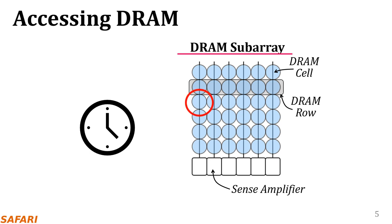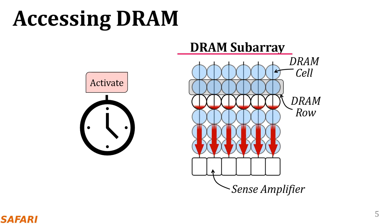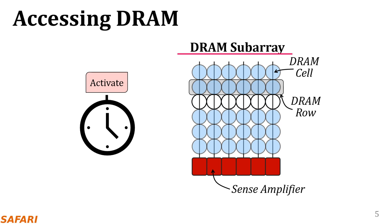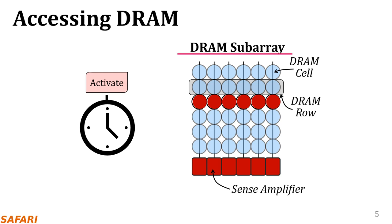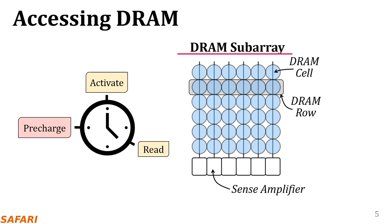Now let's take a look at DRAM commands that the memory controller issues to read data from a particular DRAM cell. To perform an access, the memory controller first activates or opens a row by issuing an activate command. Activate causes the cells of the selected row to share their charge to the sense amplifiers. Based on the charge amount received, the sense amplifiers determine the value that each cell stores and then they restore the charge of the cells back to its initial amount. After row activation, the memory controller issues a read command to the DRAM. With that command, the data is read from the corresponding sense amplifier and transferred over the memory bus to the CPU.